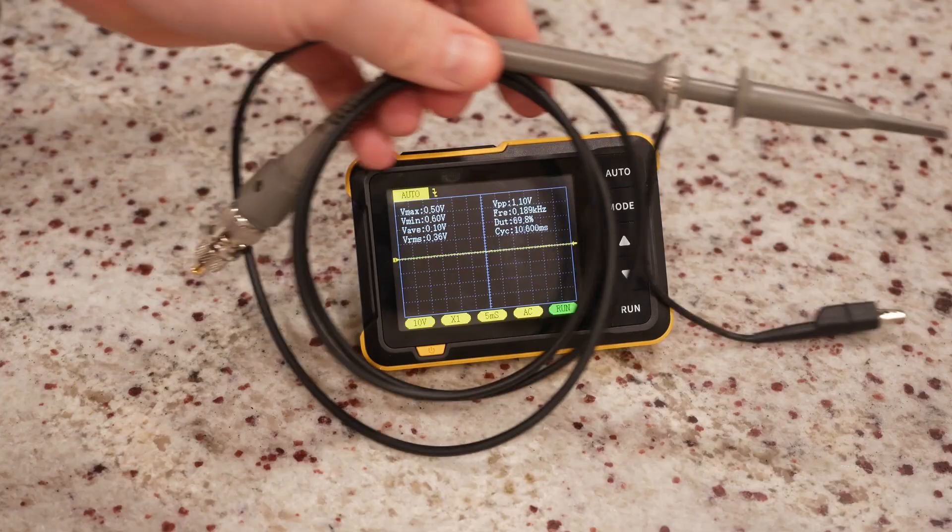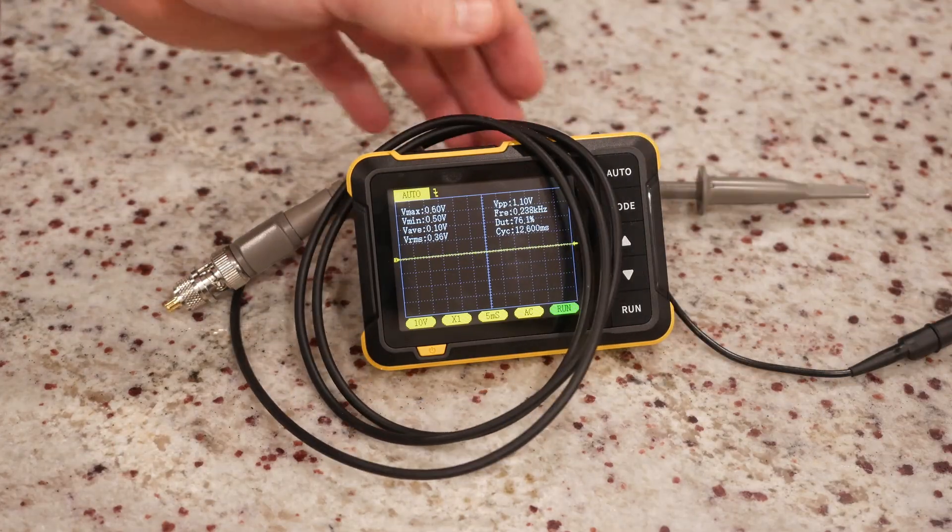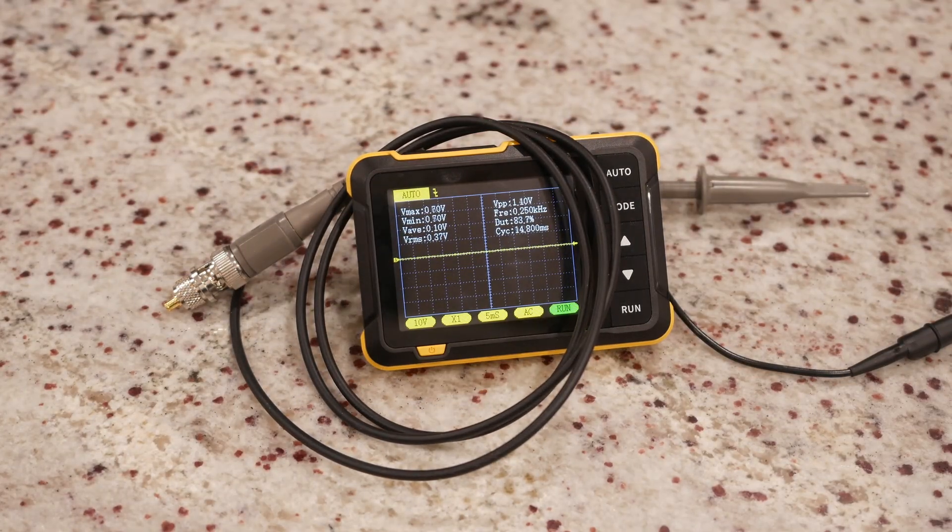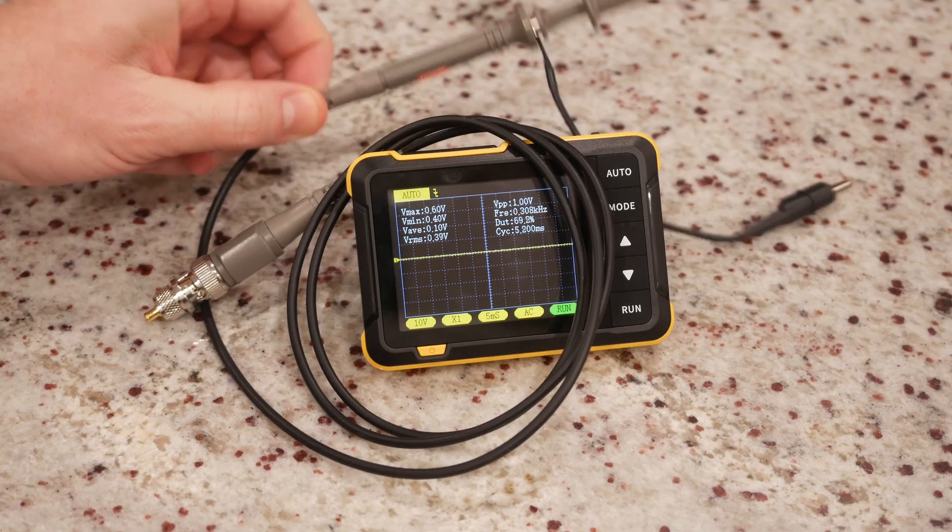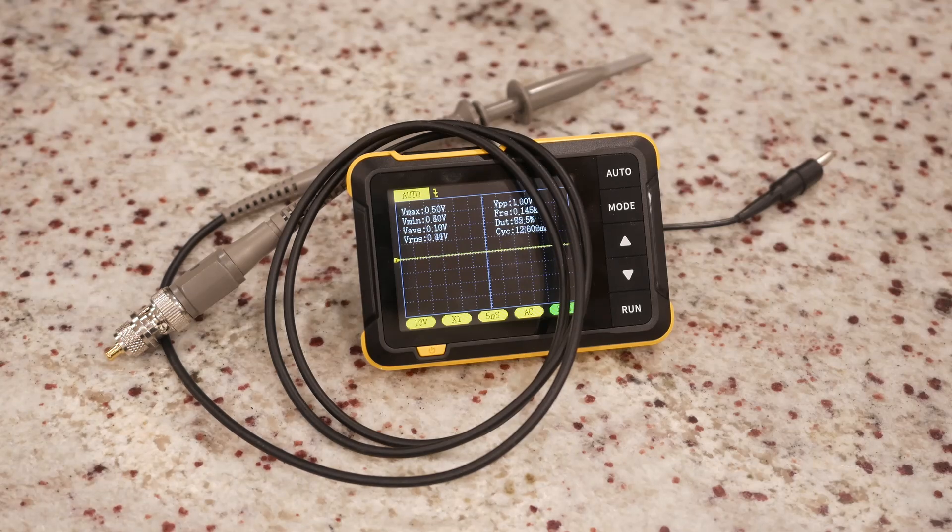Also, this probe is included in the Pro version, and it makes it a lot more functional, especially if measuring anything over 40 volts. So if you're looking at household AC power, definitely get the Pro version that comes with the 1x and 10x probe.